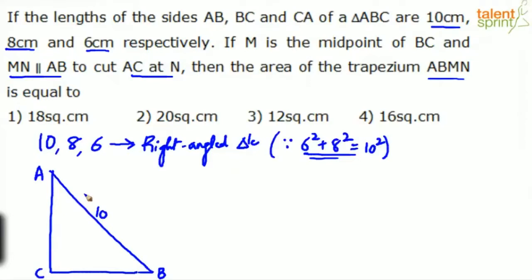Now it says M is the midpoint of side BC. M is the midpoint of side BC. So for the side BC, M is the midpoint. So this is M. Let's take this as M.